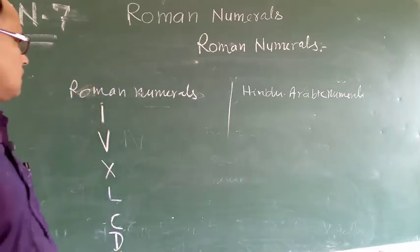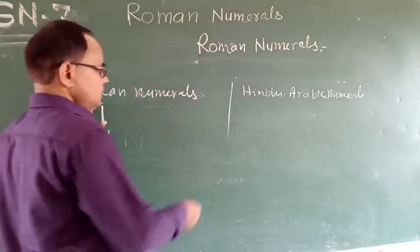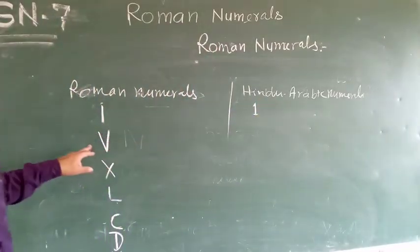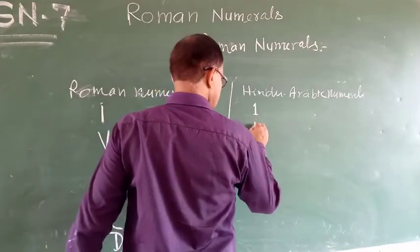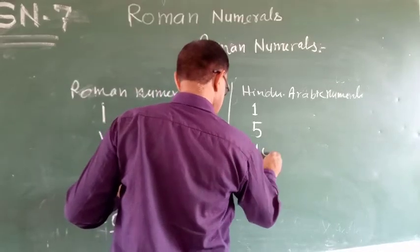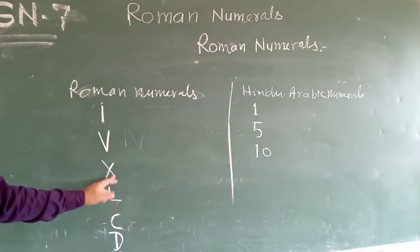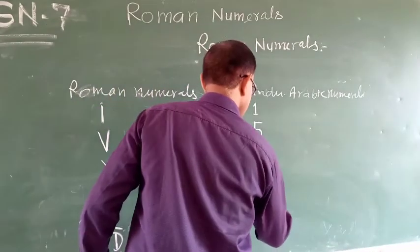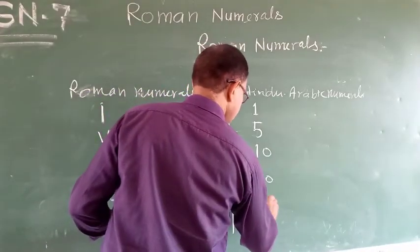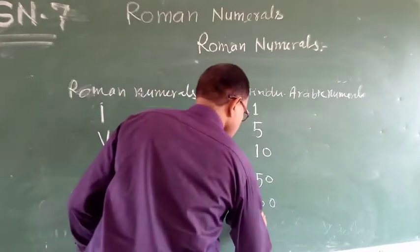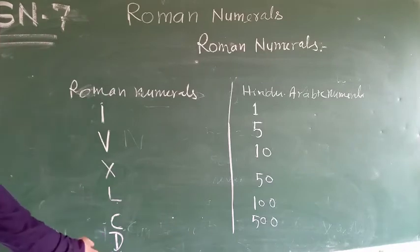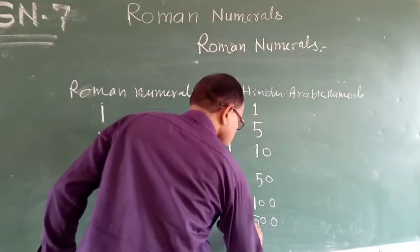The value of I in Hindu-Arabic is 1. The value of V is 5. The value of X is 10. The value of L is 50. The value of C is 100. The value of D is 500. And the value of M is 1000.